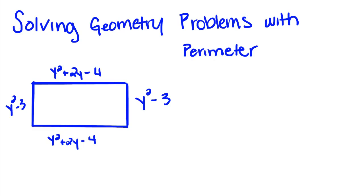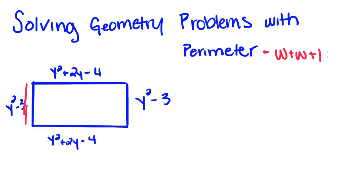We're going to use polynomials to find the perimeter of this rectangle. If you remember from geometry, or if you haven't taken it yet, just to remind you that the perimeter is the sum of the length of each side of a shape. So it would be width plus width plus length plus length. We have to add up each one of these polynomials to find what the perimeter of this shape is.